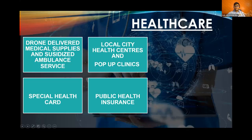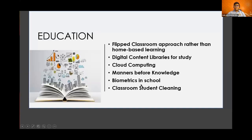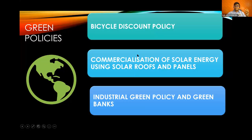For healthcare we have four major and unique policies. Drone delivery of medical supplies is very important in the current age, especially due to the pandemic. We will give a special health card to people according to their economic status and number of dependents so that everyone can afford healthcare. For education, we will follow a flipped classroom approach rather than a bookish one. For green policies, we identified three special initiatives: a bicycle discount policy in shops, commercialization of solar panels so residents can sell excess energy, and all businesses must enter an agreement with green banks to promote green laws.